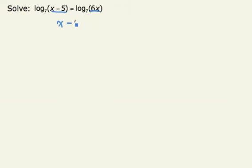So we have this equation, x minus 5 equals 6x. If we subtract x from both sides, we get negative 5 equals 5x, or negative 1 equals x.